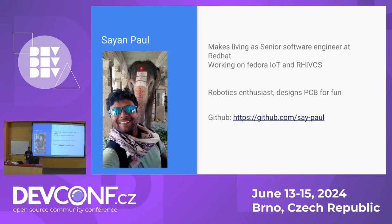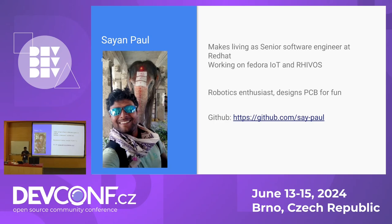My name is Cheyenne Paul and I am a senior software engineer at Red Hat, working mainly on Fedora IoT and Rivos. Rivos is basically an OS for vehicles. Apart from that I do robotics like small projects, I design PCBs for fun, and this is me when I'm not doing anything — trying to take crazy pictures.